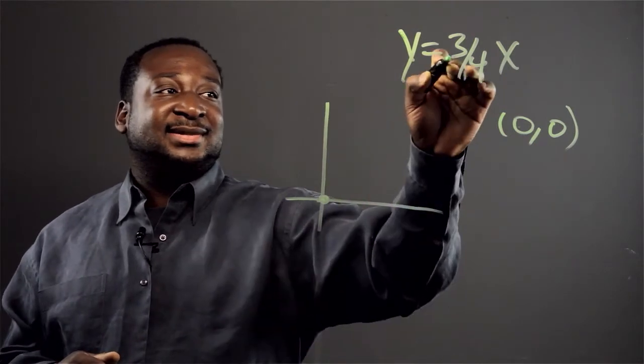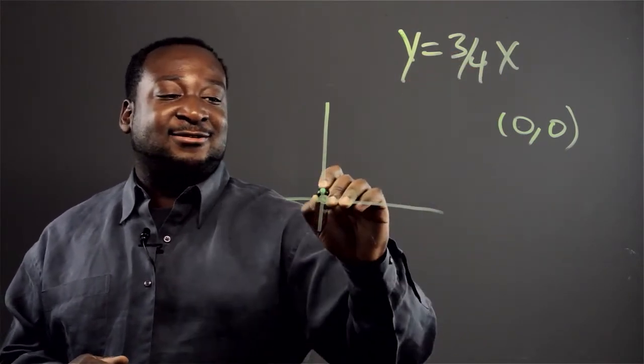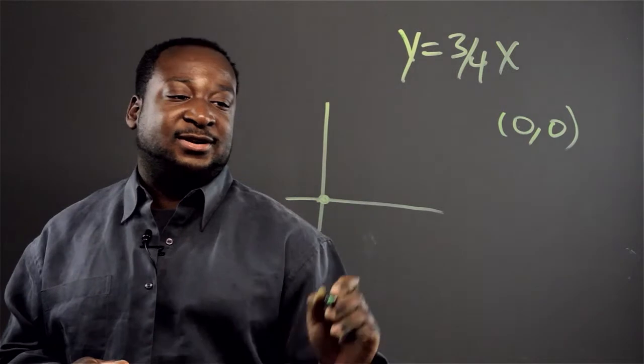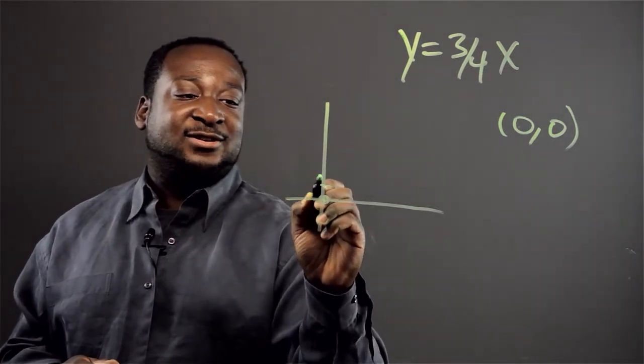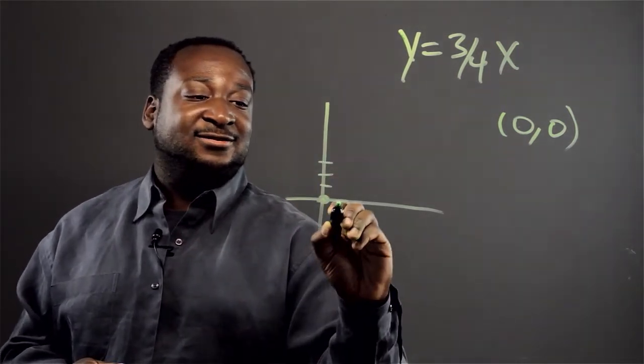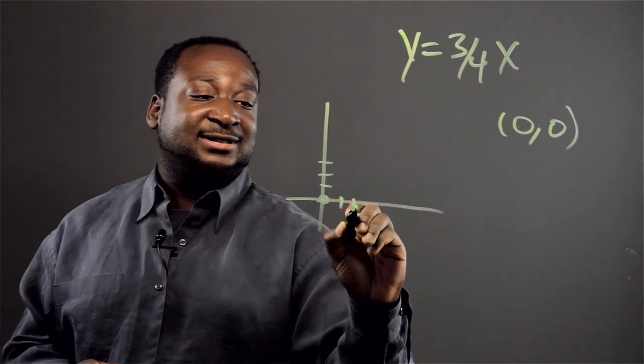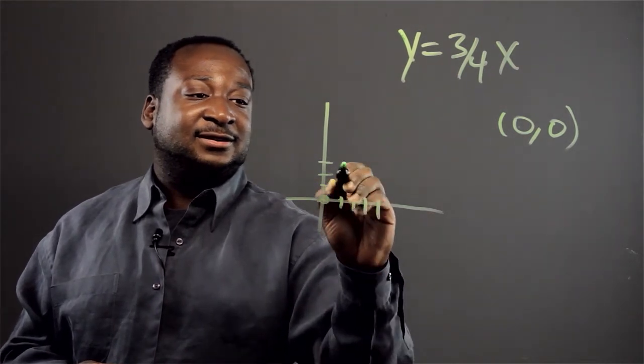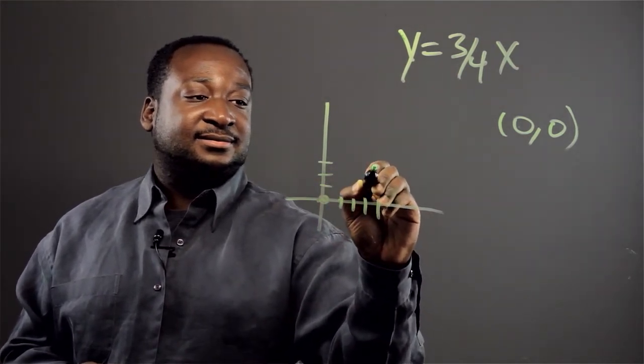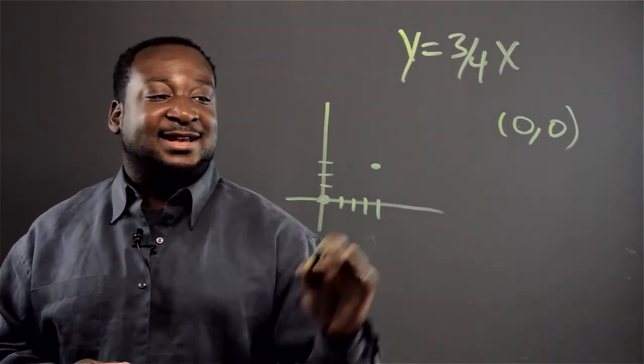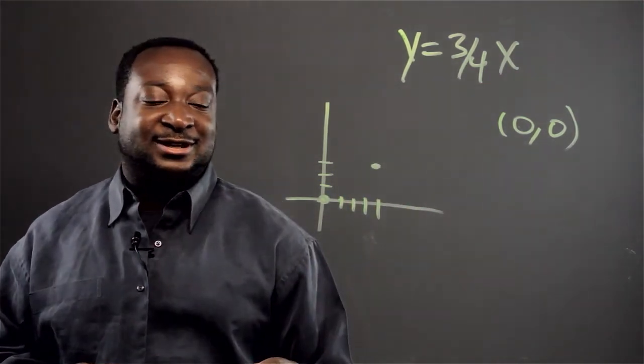So we know the graph is going to go up three and over four. So we'll go up one, two, three, and over one, two, three, four. Boom. So now we have our two points.